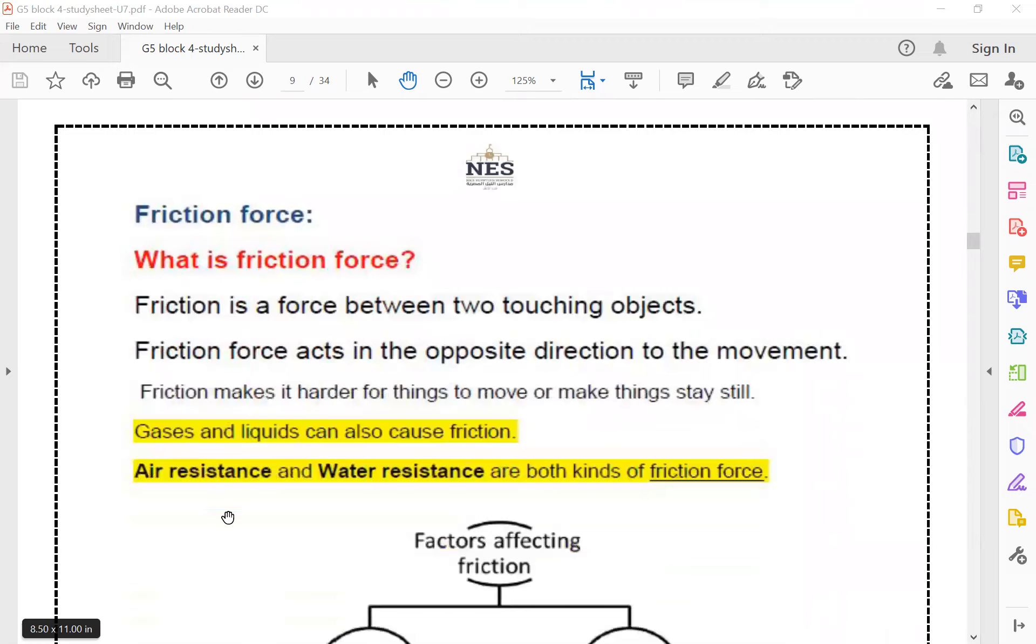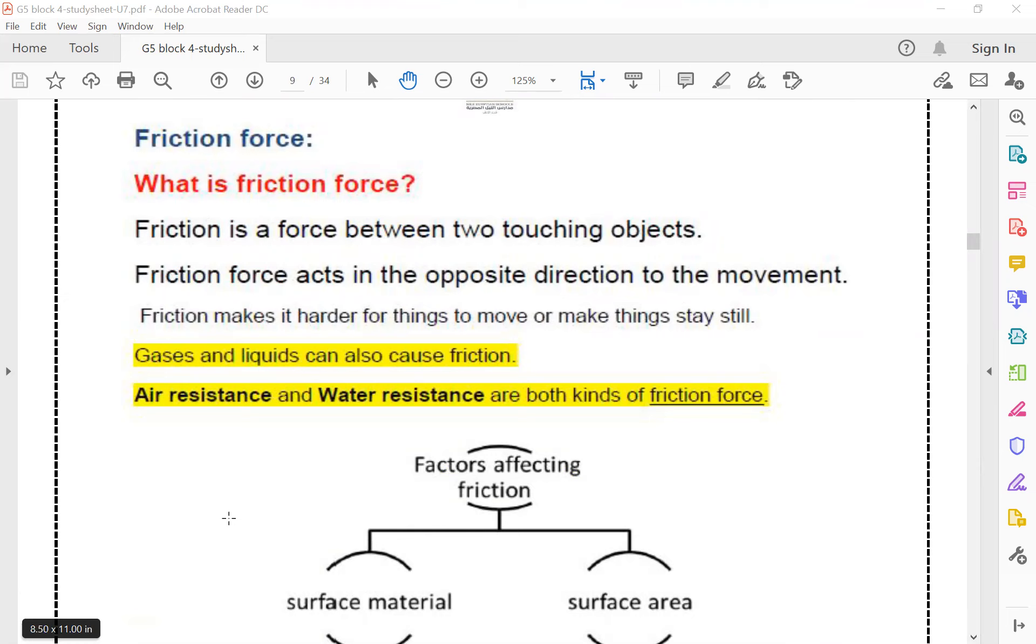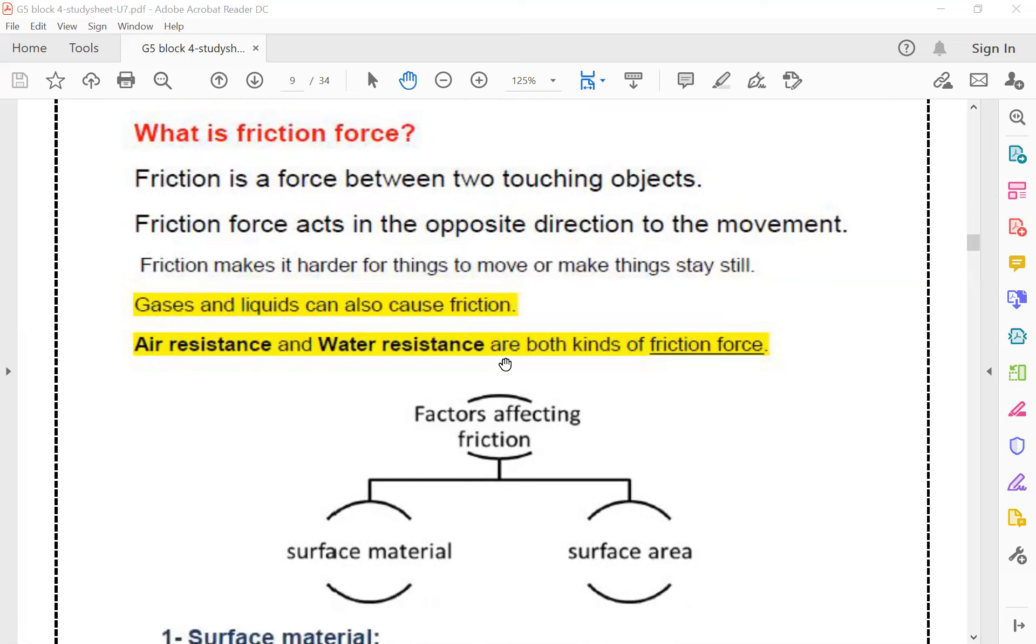Let's discuss the friction force. What is friction force? Friction is a force between two touching objects. Friction force acts in the opposite direction to the movement. When objects move on a car on a road or a plane in the air, they face a friction force. This force has opposite direction to the movement. Friction makes it harder for things to move or make things stay still. Gases and liquids can also cause friction like what we said before. Air resistance and water resistance are both kinds of friction force.